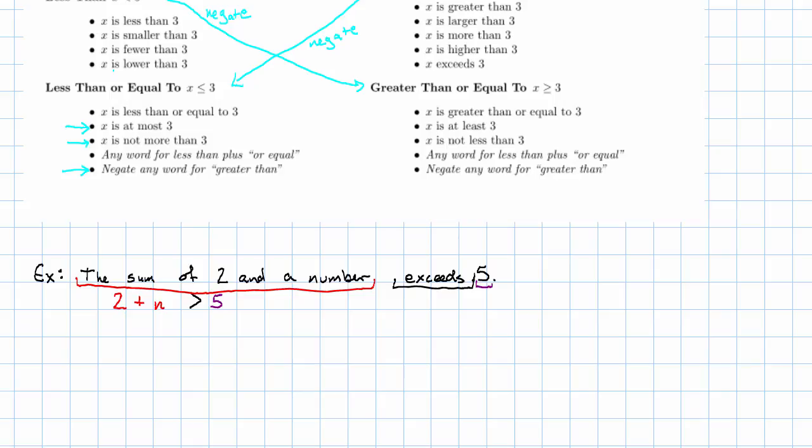Let's see one more example. Suppose we're told that 6 less than a number is at most 7. Our first task is to identify the verb. In this case, 'is' is the verb, but 'is at most' serves as a verb phrase. 'Is at most' means less than or equal to.